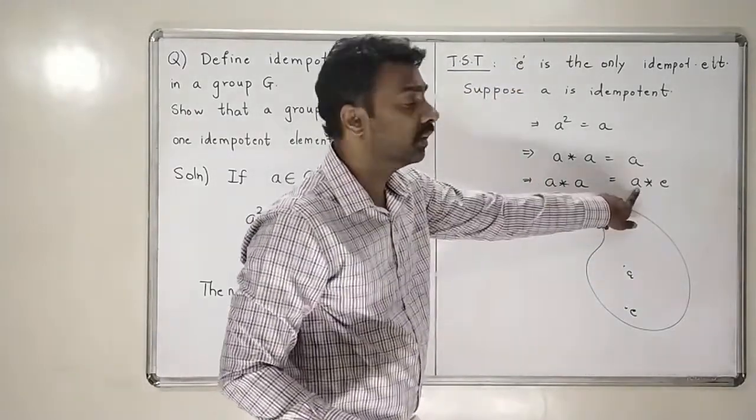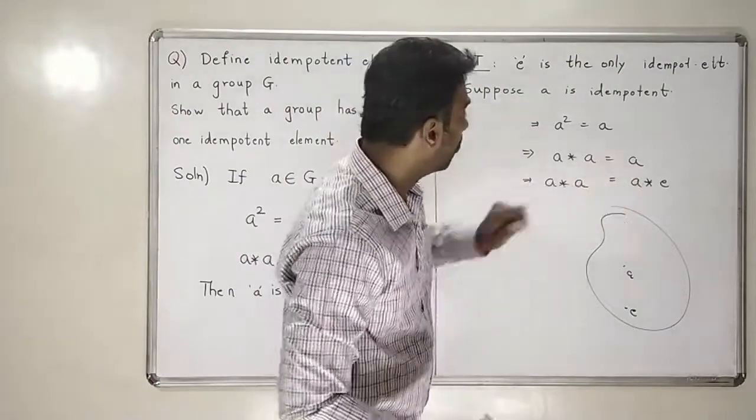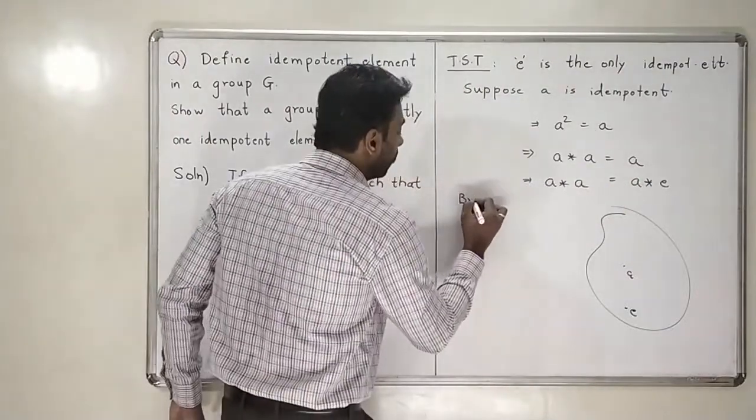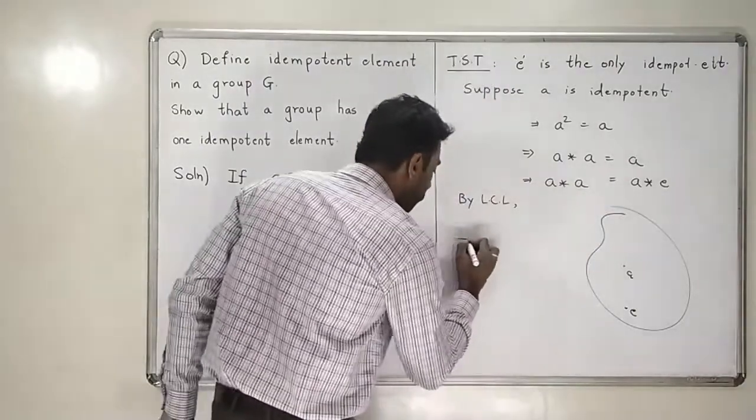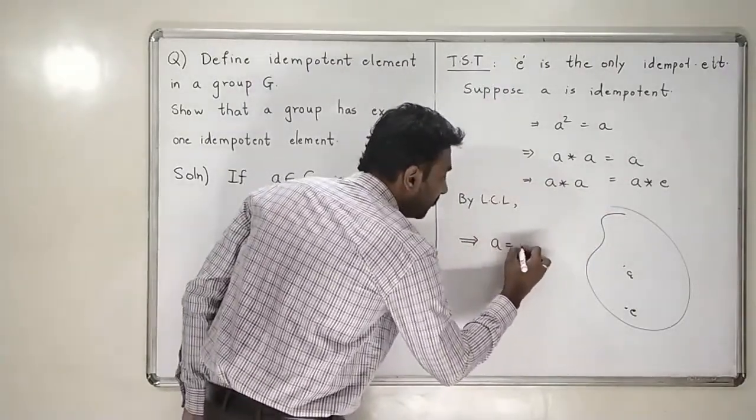Now, I see that this a and this a can go away by my left cancellation law. So, by left cancellation law, this a and this a, I can cancel. And what will I get? Is that a is equal to e.